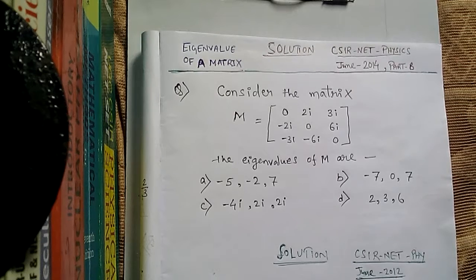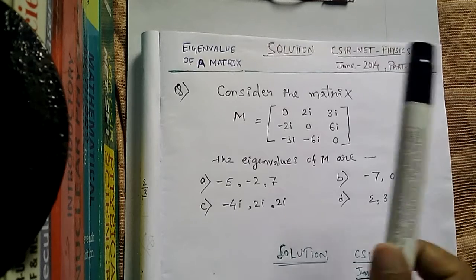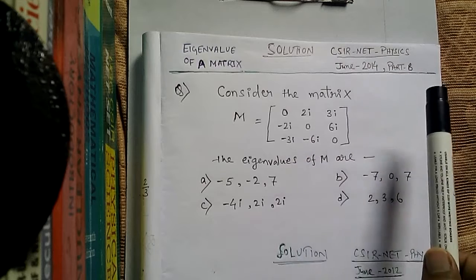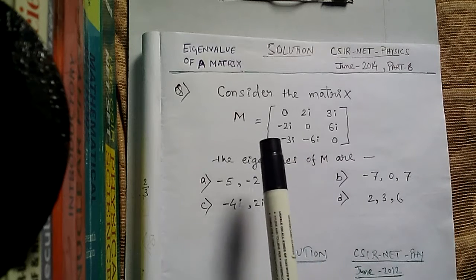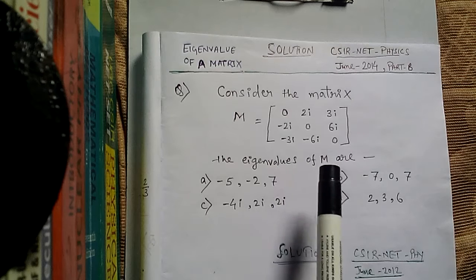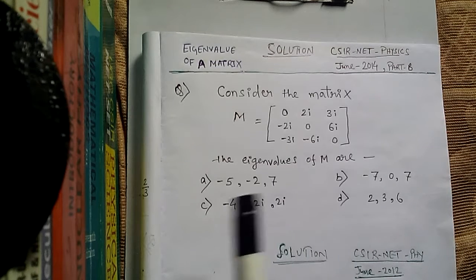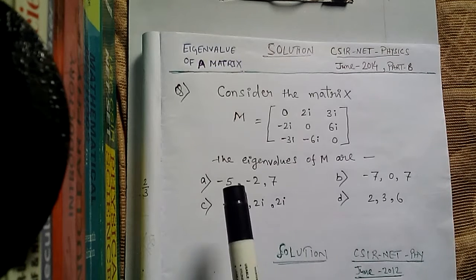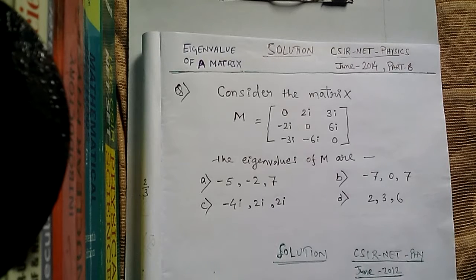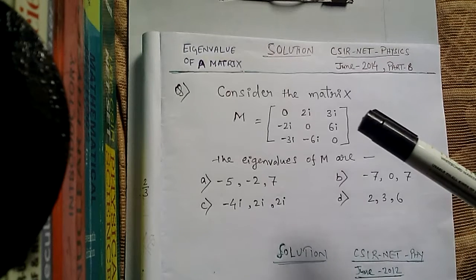Hey friends, this is Vidhan. Welcome to my channel. Today we have a problem on finding eigenvalues of a matrix from June 2014 Part B. It says there is a matrix M, and the eigenvalues of matrix M are given as options A, B, C, D. Notice that each option contains three eigenvalues.